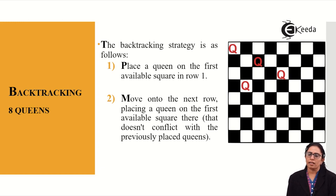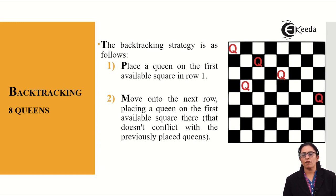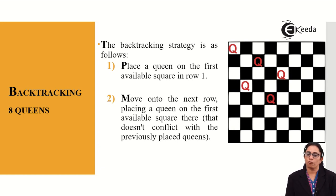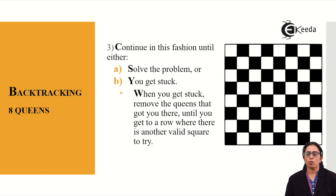When we consider placing the fifth queen it can be placed, but placing the sixth queen becomes difficult as all paths are covered by previous queens. When I place my fifth queen, I cannot place any further queens. If I cannot place another queen, I have to start backtracking. I change the position of my fifth queen and continue backtracking so there are no more conflicts.